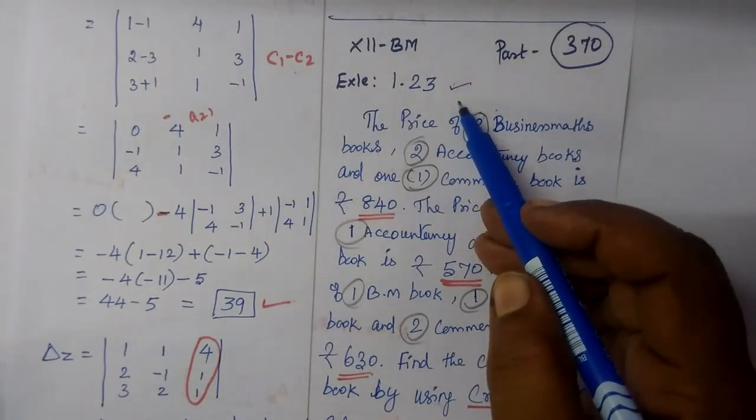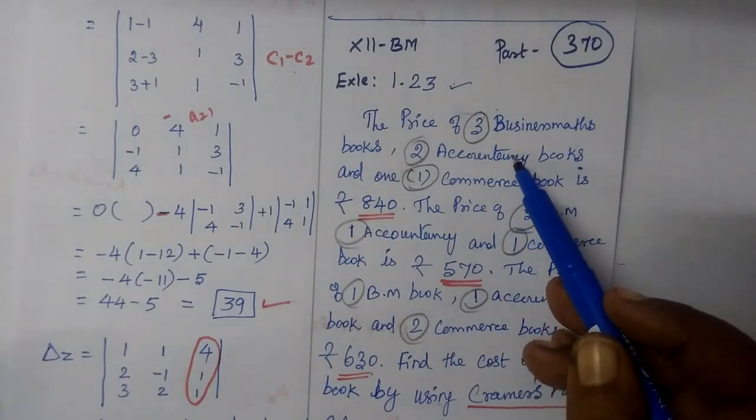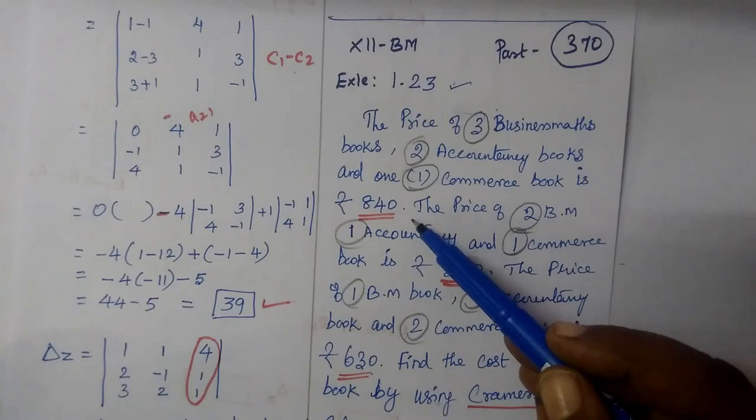Example 1.23, 12th business math. You are given the price of 3 business math books, then 2 accountancy and 1 commerce, then 840.